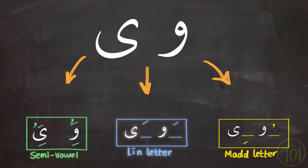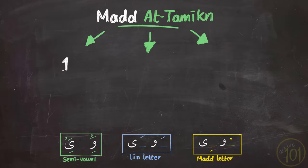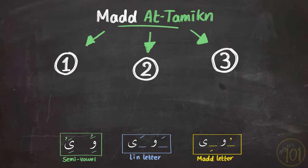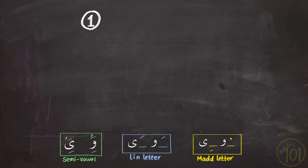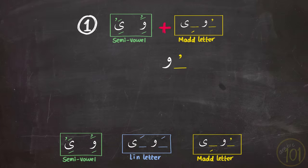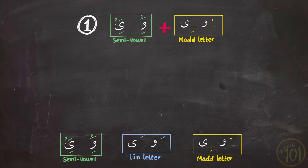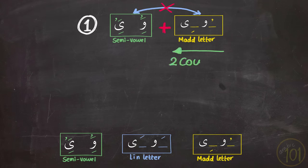Understanding these three cases of these letters is essential in understanding what comes next. So keep these three concepts in mind as we continue. So what are the three cases or rules of مد التمكين? First, if the مد letter was followed by a semi-vowel of the same kind — so if وو as مد letter was followed by وو as a semi-vowel, and يا as مد letter was followed by يا as a semi-vowel. When this happens, there is a likelihood that these two letters are fused together, while this should not happen.